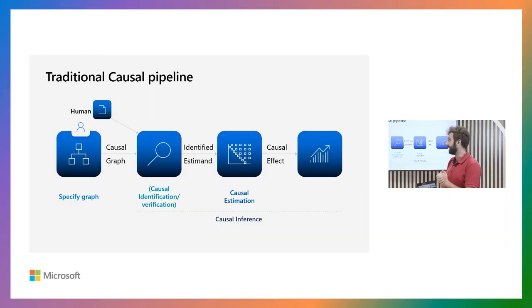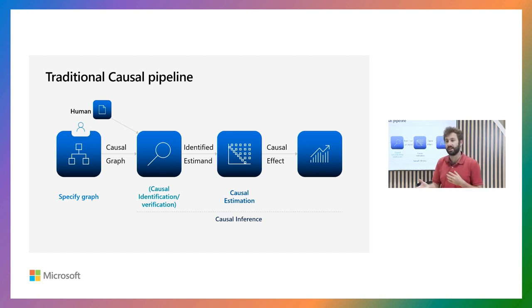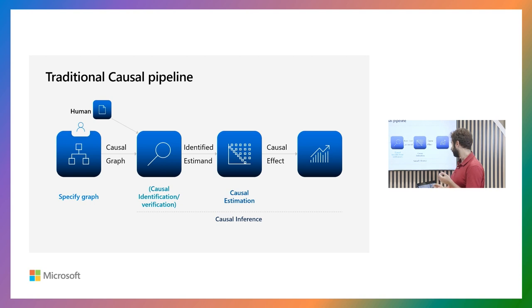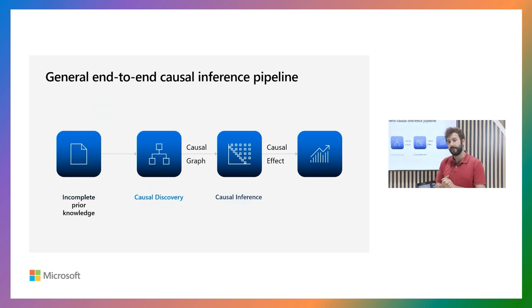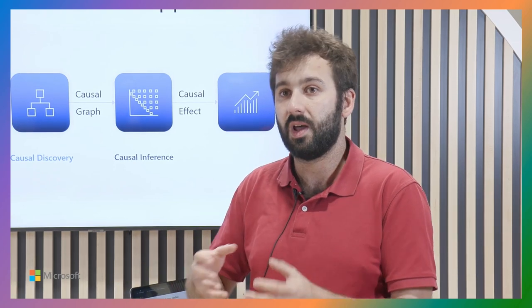Altogether, what we're trying to do is take this traditional causal pipeline — where you usually have to specify a graph requiring domain knowledge, which is often not available especially with very high dimensional datasets — and move to a much more general end-to-end inference pipeline that allows for incomplete prior knowledge. You can say, 'there should be an edge' or 'I'm 50% certain there should be an edge,' and also indicate that you don't know about other edges. We will then learn the causal graph, learn the functions, and using this deep causal model estimate average treatment effects, conditional average treatment effects, and ITEs to make impactful real-world decisions.